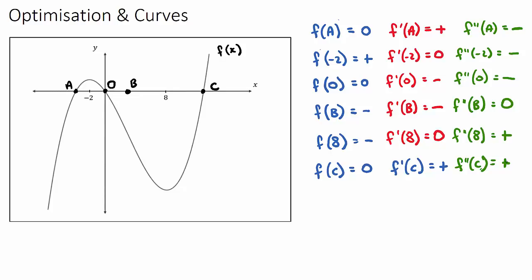So hopefully once we have looked at all of that, we now understand the difference between f(x), f'(x), and f''(x). f(x) is our original function, f'(x) is the first derivative, and f''(x) is the second derivative. It is really important to understand that at any point x: f(x) means the y value, f'(x) means the value of the gradient or slope, and f''(x) is the value of the concavity. Understanding this lets us draw derivative curves and answer tricky problem-solving questions.